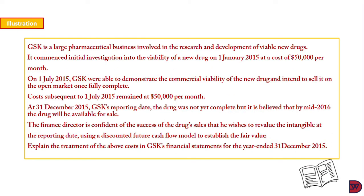Now let's look at another illustration. JSK is a large pharmaceutical business involved in the research and development of viable new drugs. It commences initial investigation into the viability of a new drug on 1st January 2015 at the cost of $50,000 per month. On 1st July 2015, GSK were able to demonstrate commercial viability of the new drug and intend to sell it on open marketing once fully completed. Costs subsequent to 1st July 2015 remain at $50,000 per month. At 31st December 2015, GSK's reporting date, the drug was not yet complete, but it is believed that by mid-year 2016, the drug will be available for sale. The finance director is confident of the success of the drug sale and wishes to revalue the intangible at the reporting date, using the discounted cash flow model to establish the fair value.